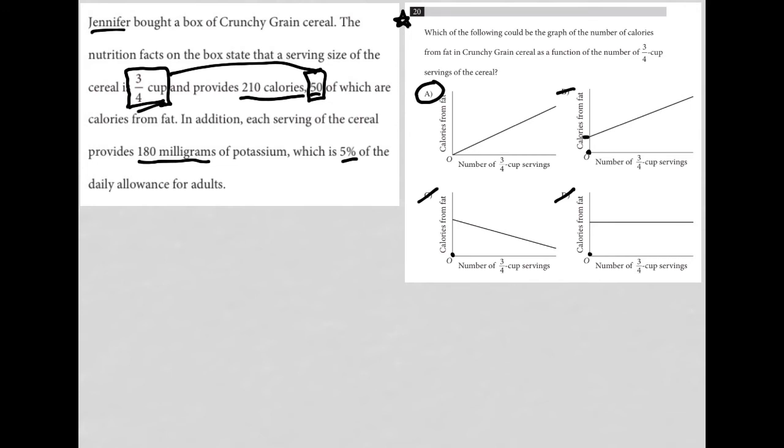We also know that choice D is flat, meaning we're not getting additional fat although we're eating more, which doesn't make sense. Choice C is also incorrect for another reason beyond the y-intercept not being at zero as expected.